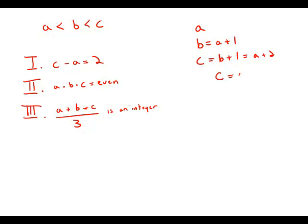Well, if we take this equation, C equals A plus 2, and subtract A, we get C minus A equals 2. And it makes sense that with consecutive integers, if we go three in a row, the third one is two higher than the first one. So this statement is true.